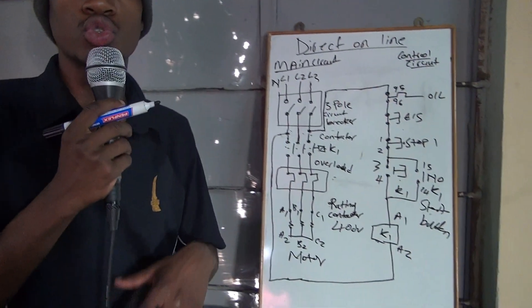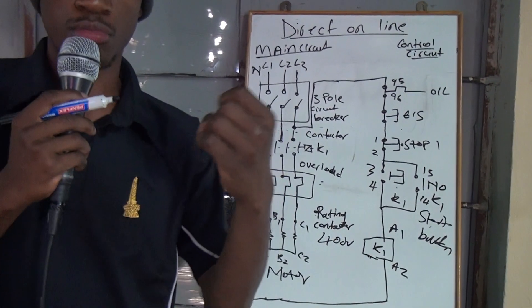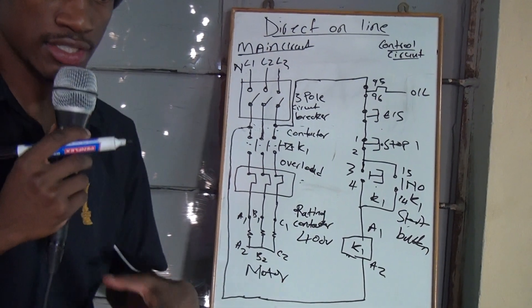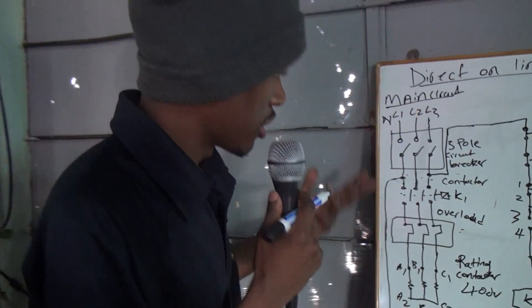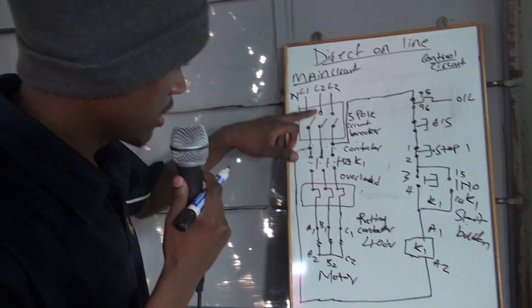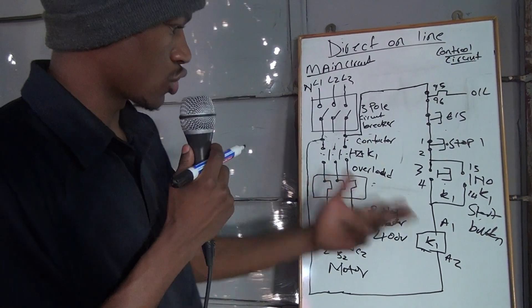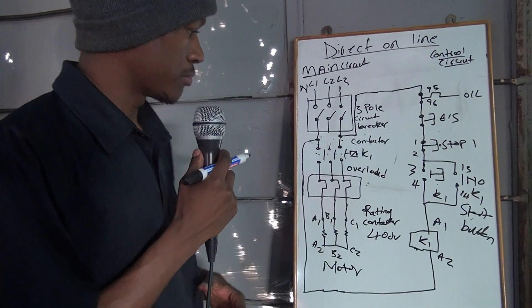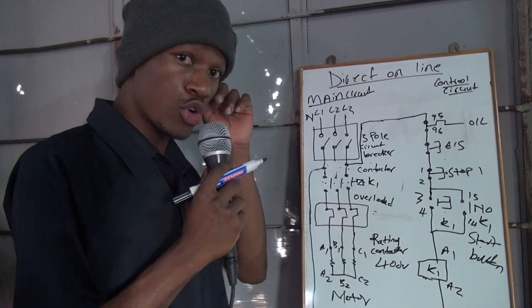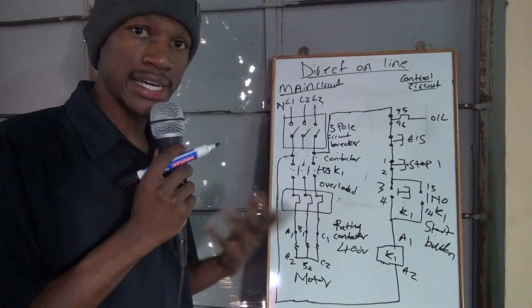So, that's it about direct online. Now your motor is isolated, and now your motor is safe. Your motor is safe from overcurrent. Your motor is safe from, if let's say one of the lines, there's no supply from one of the lines, your motor will stop. There are a lot of advantages that DOL does.